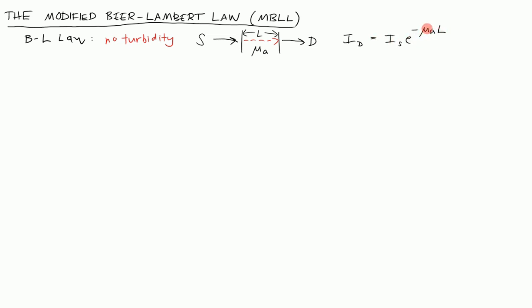Now we're going to modify that. Here's the modified Beer-Lambert law, MBLL. To start thinking about that, we consider a material that has air up here and tissue down below. We're going to inject light into this material and measure light coming out of the material. We're going to give that a separation variable called rho. The light that goes from source to detector is going to travel along some ensemble of paths.